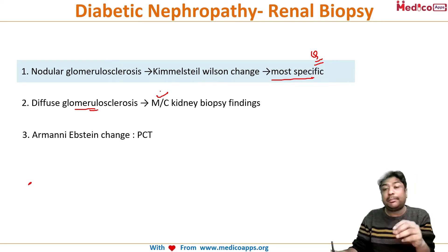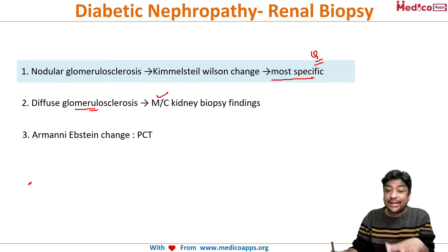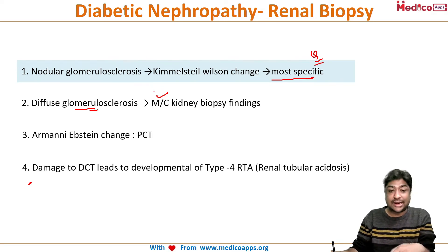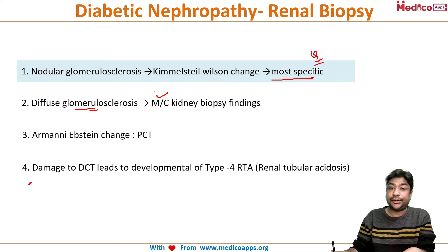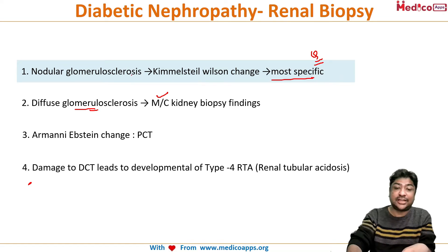A third important histopathological change is the Armani-Epstein change, seen in the proximal convoluted tubule. The fourth important finding is the development of type 4 renal tubular acidosis due to damage to the distal convoluted tubule. These are the four histopathological findings seen in diabetic nephropathy patients.